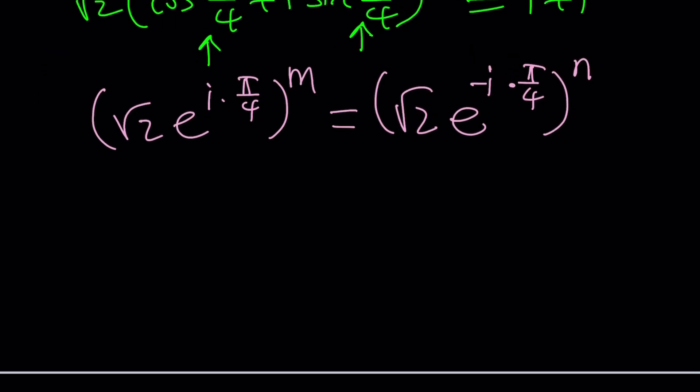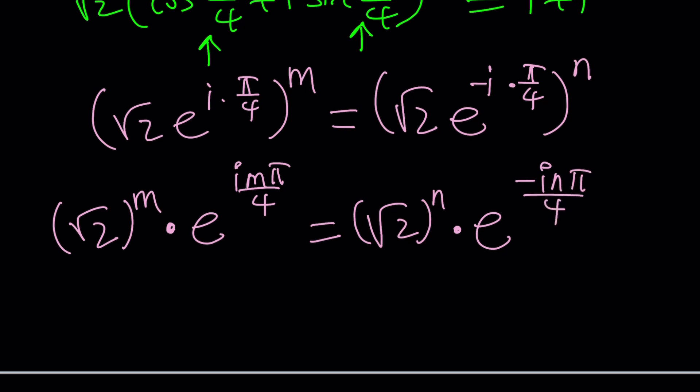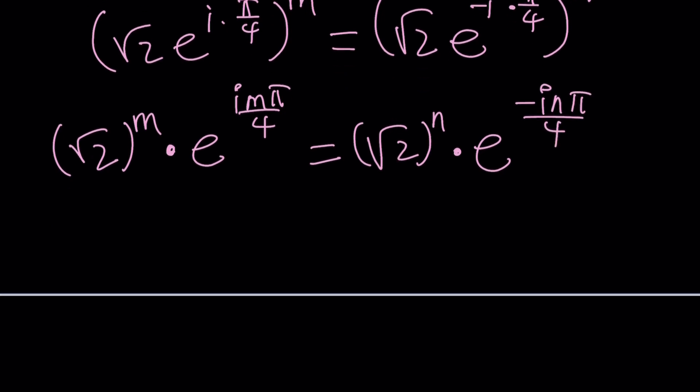What do we do? We can kind of expand it. It's going to look like root 2 to the power m times e to the power i m pi over 4, root 2 to the n times e to the power negative i n pi over 4. So here's the problem. We can safely say that the moduli have to be equal, which means m equals n.